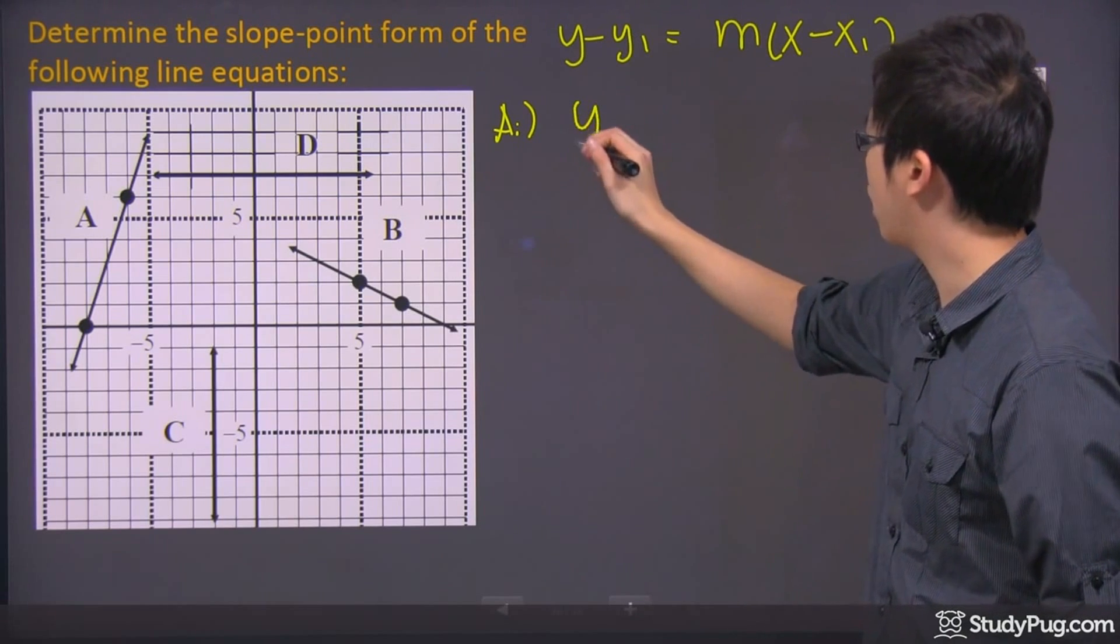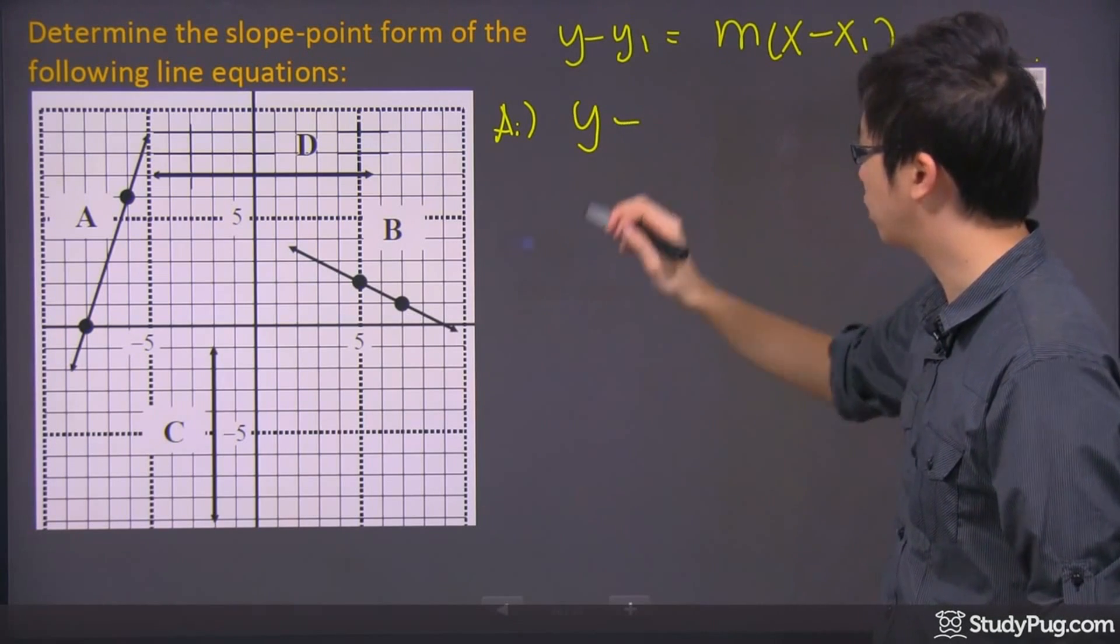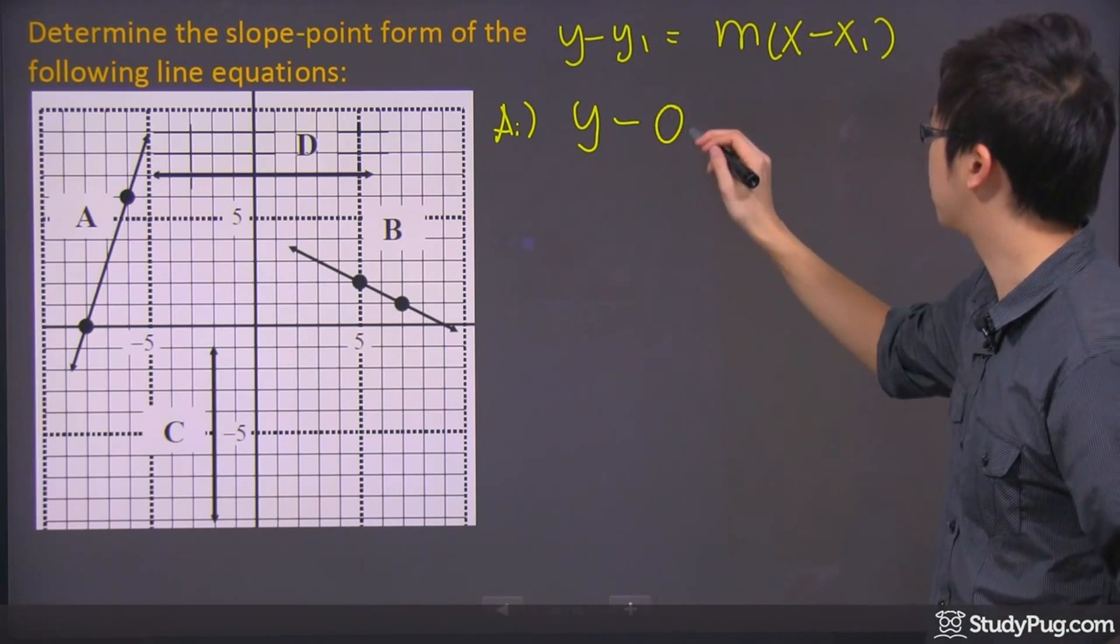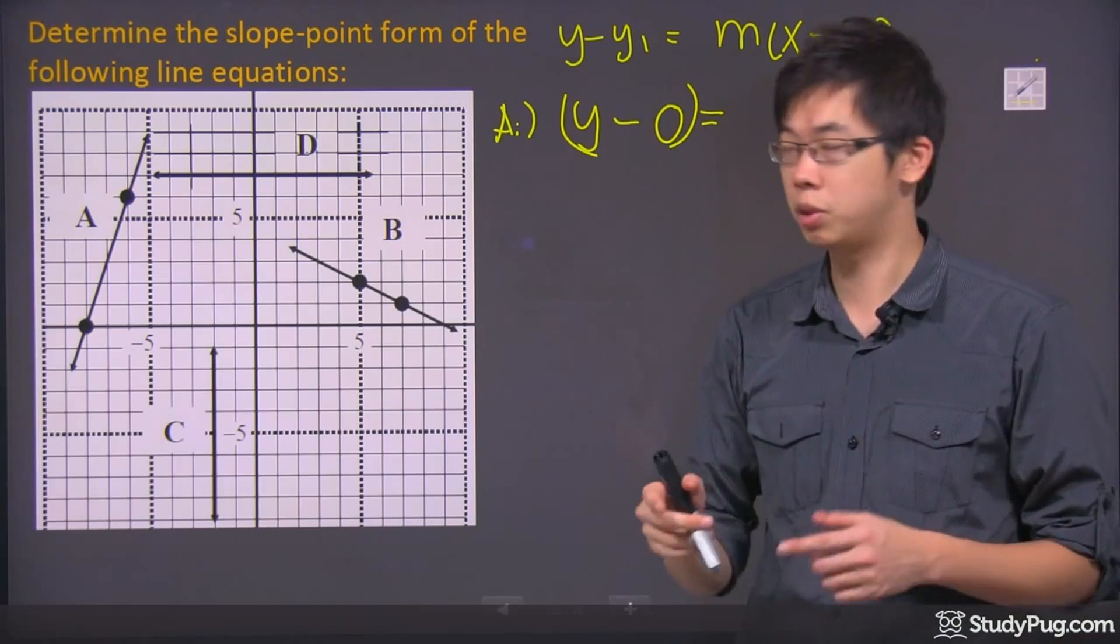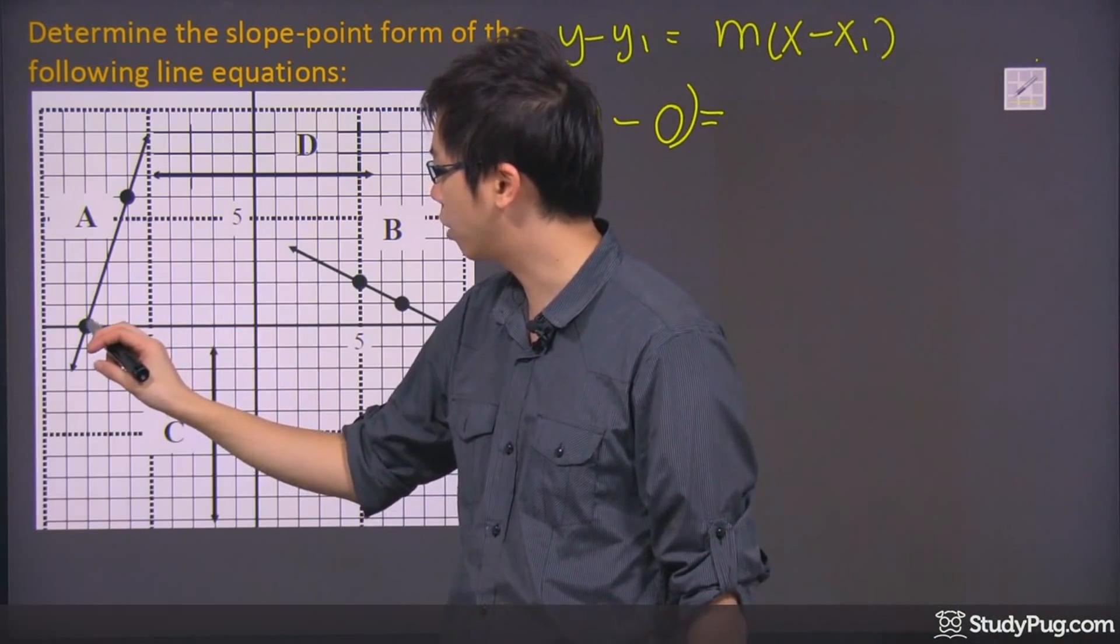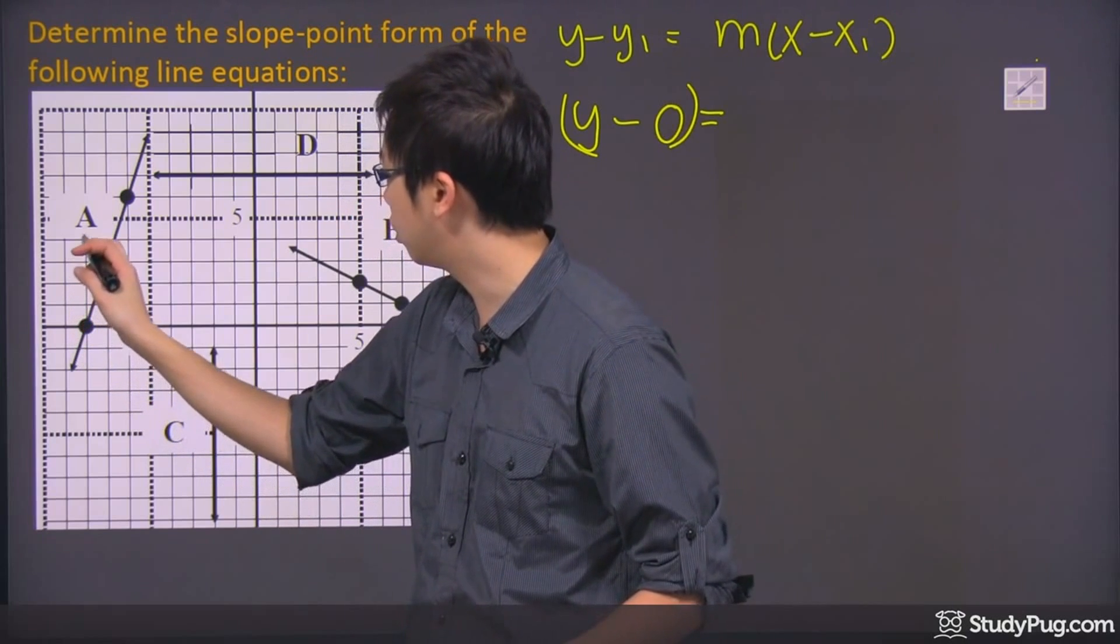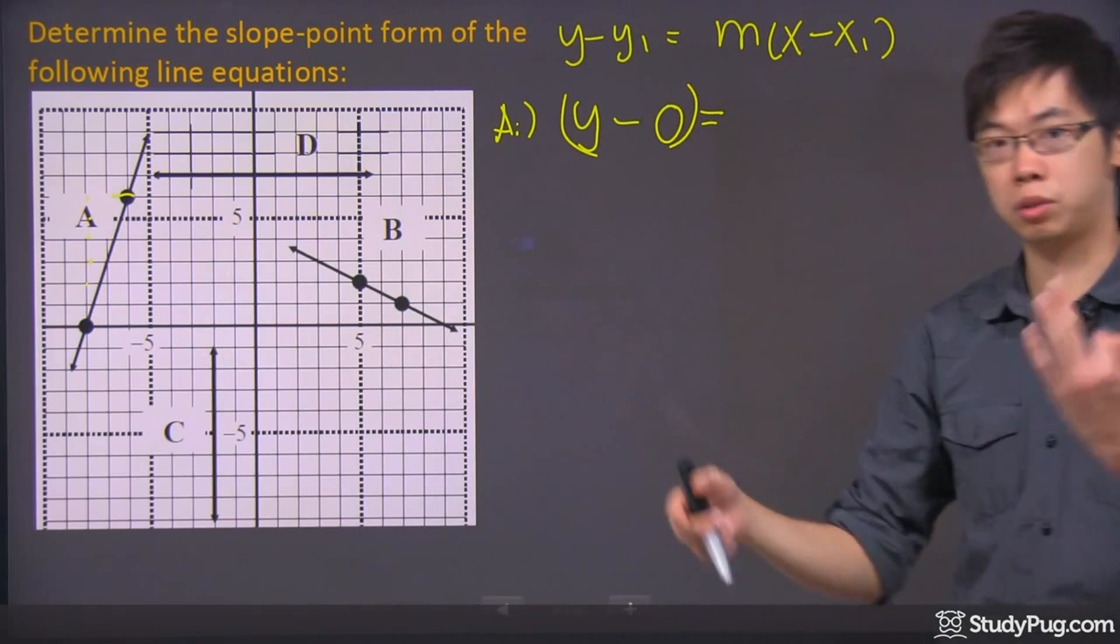So keep the first y as a variable, don't change that. Then you're going to subtract the y value of this point, which is 0. So you'll be subtracting 0 equals to the m, which is the slope. Now the slope should be easy to calculate because you're doing the rise over run, right? So you go up 1, 2, 3, 4, 5, 6 over 2. So 6 over 2 means 3.